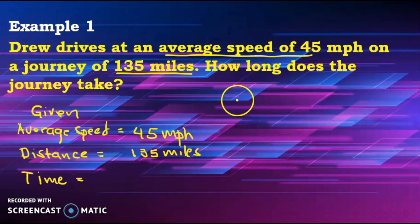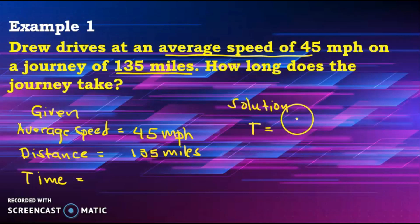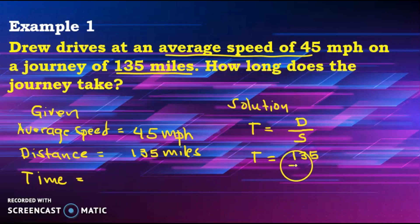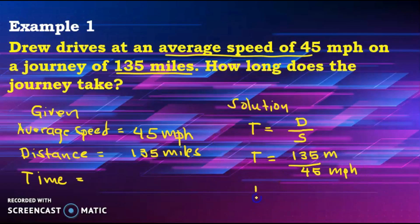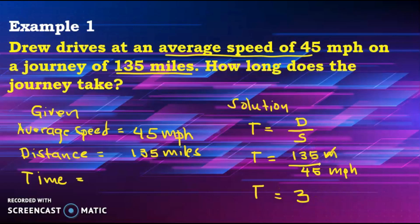So for our solution, the formula is time equals distance divided by speed. Time equals 135 miles divided by 45 miles per hour. 135 divided by 45 equals 3. Cancel the miles — what remains is hours. So our answer is 3 hours.